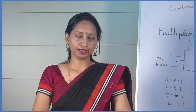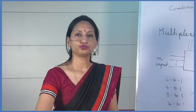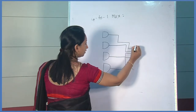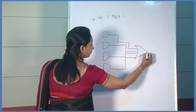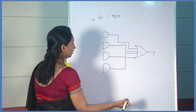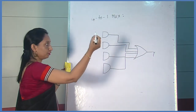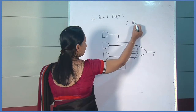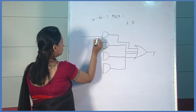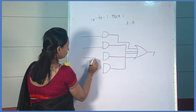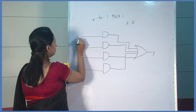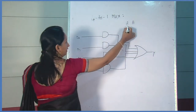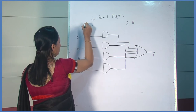Now let us see the 4-to-1 multiplexer. Here we add an OR gate, and the output is 1. The control lines will be 2. Suppose A and B are the control lines, and the data inputs are D0, D1, D2, and D3. A and B are the control lines, and a NOT gate is given.